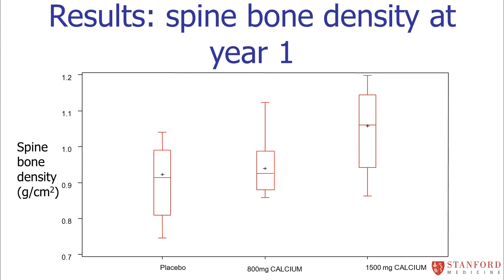Here are results from my hypothetical data showing some box plots. The placebo group is a little bit lower than the 800 milligram calcium group, and that's a little bit lower than the 1500 milligram calcium group. So it looks like there's some increase as you add more calcium supplement to the diet in terms of spine bone density after a year. How do we determine whether the differences you're viewing here are statistically significant? This is where a one-way ANOVA would be useful.